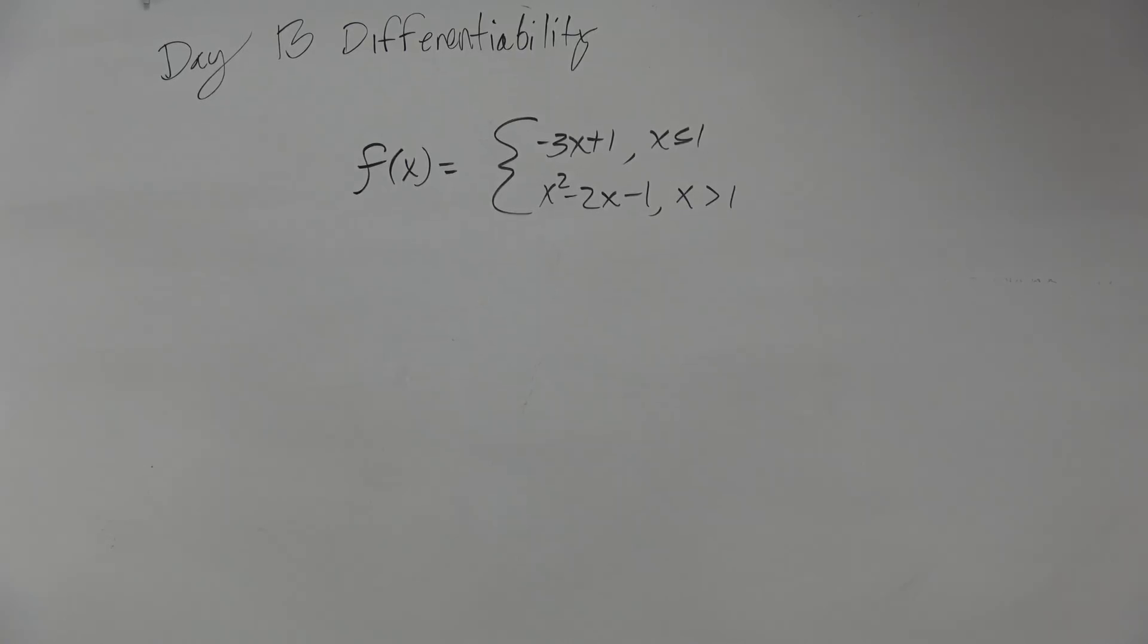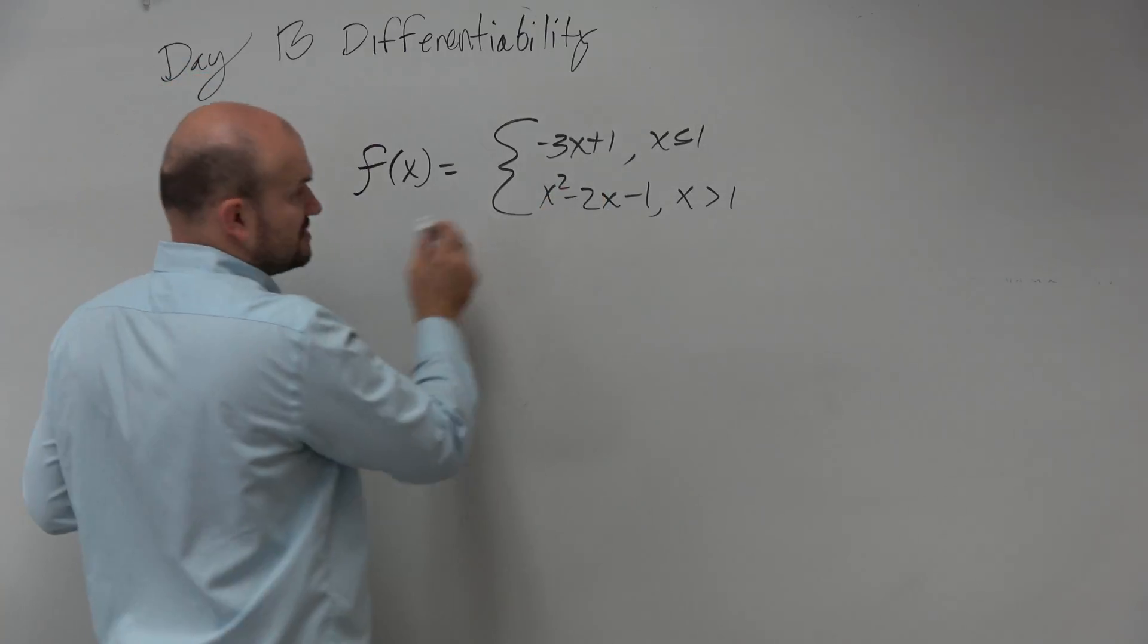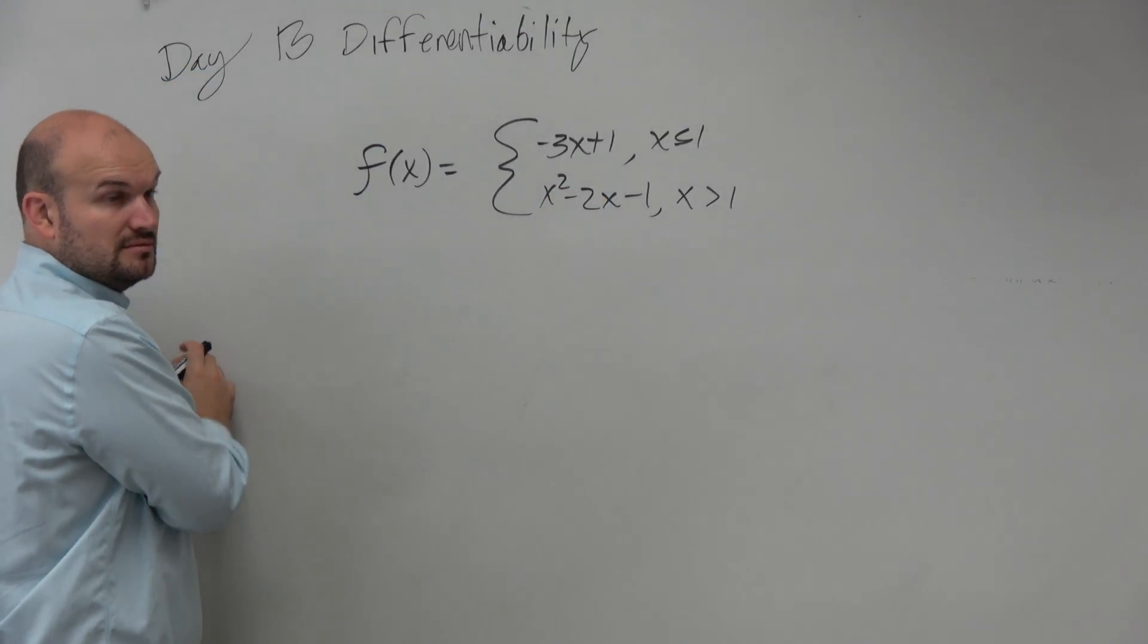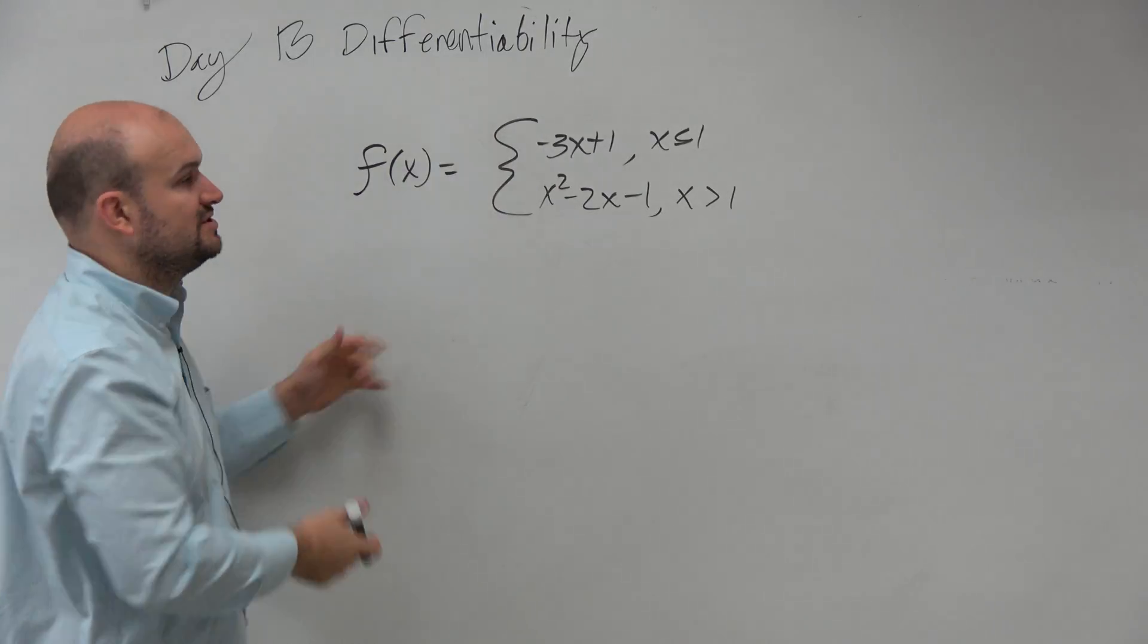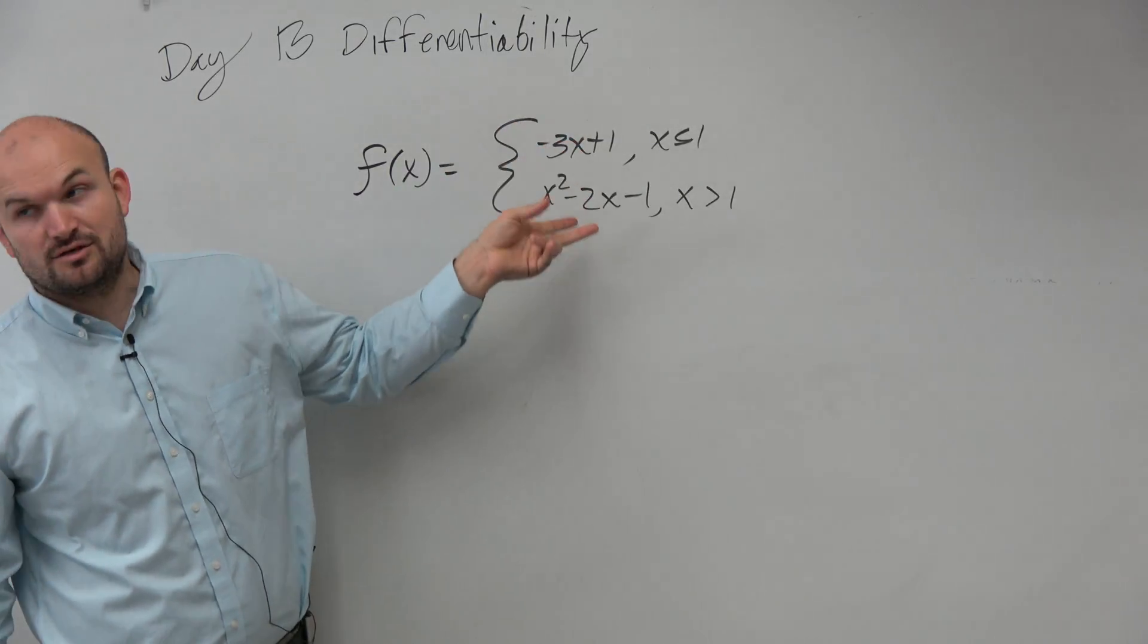Do you guys agree? Okay. So the first thing is, let's figure out where it's discontinuous. Both of these functions are continuous functions. We know there's no discontinuity here—that's a line, that's a quadratic.